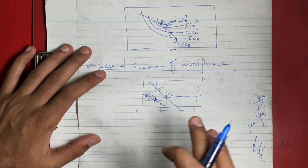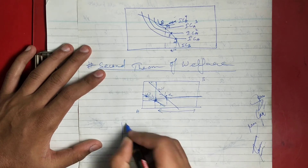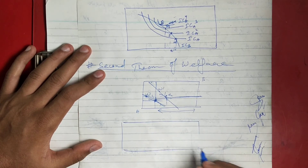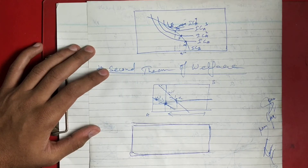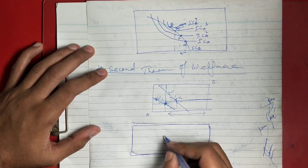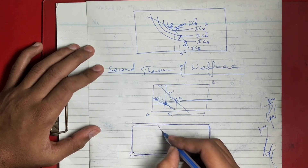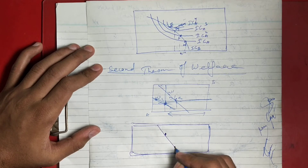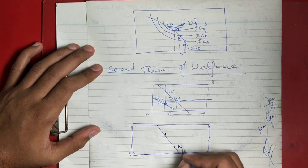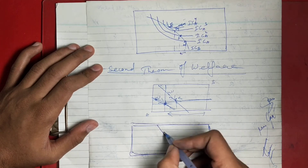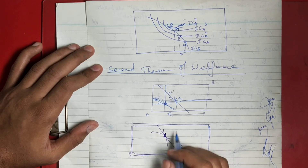If both persons have convex preferences, then we can draw a straight line between two sets of preferred bundles. We take our preferred bundle and make the budget line pass through it. We change our initial endowment to such a point that it arrives here, and any bundle on this line becomes the preferred bundle.